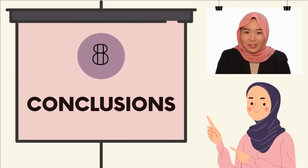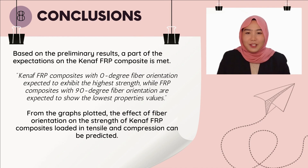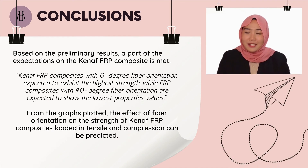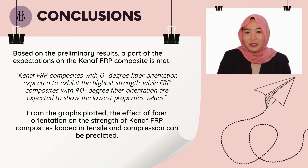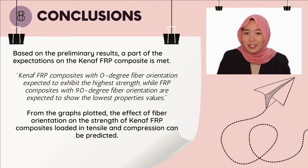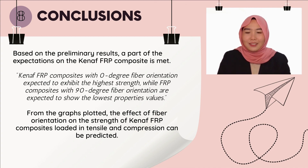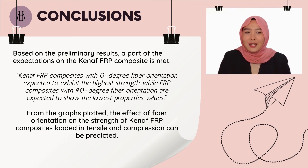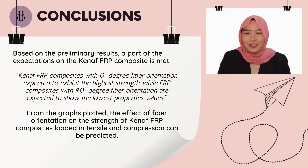And finally, we reach the conclusion of the presentation. Based on the preliminary results, it can be proven that kernel fiber reinforced polymer composites with 0 degree fiber orientation are expected to exhibit the highest strength, while composites with 90 degree fiber orientation are expected to show the lowest property values. From the graph plotted, the performance values such as maximum strength and deformation, as affected by the fiber orientation of kernel fiber reinforced polymer composites loaded in tensile and compression, can be predicted.